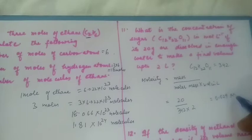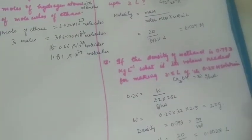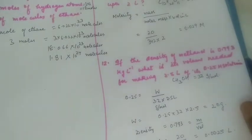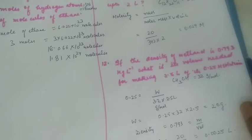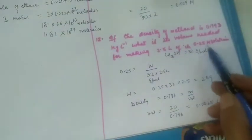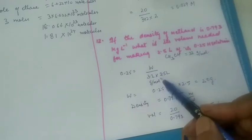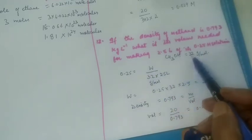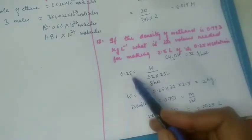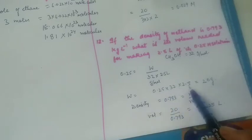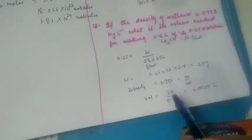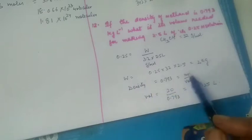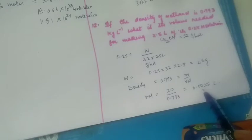If the density of methanol is 0.793 kg/L, what volume is needed to make 2.5 liters of a 0.25 molar solution? Molarity is 0.25, molar mass of methanol (CH₃OH) = 12 + 3 + 16 + 1 = 32. So W = 0.25 × 32 × 2.5 = 20 grams. Density = mass/volume, so volume = 20 ÷ 0.793 = 0.0025 liters, or 2.5 milliliters.